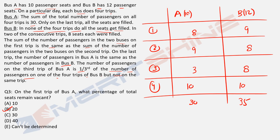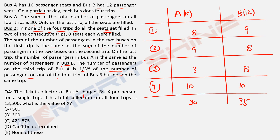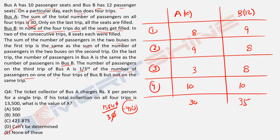Question 4: the ticket collector of Bus A charges rupees X per person for a single trip. If total collection on all four trips is 13,500, what is X? You already know the total passengers is 30 from the problem statement. So 13,500 ÷ 30 = 450. The answer is none of these — wait, 450. Check your options: the answer is 450.